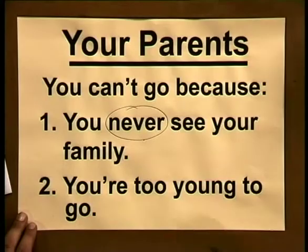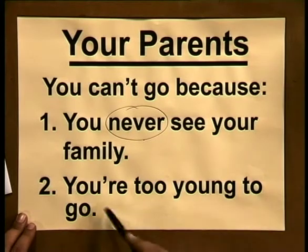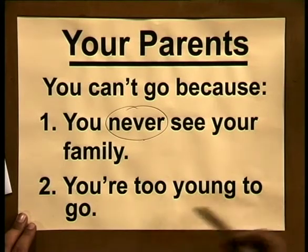So let's look at how we can improve these two arguments. In your parents' argument, the second premise was that you are too young to go. Now, if they had added an example — some kind of proof to that premise — it would become far more persuasive. What if they had said: you're too young to go because there will be alcohol there? We're starting to become more logical and more persuasive in that argument.